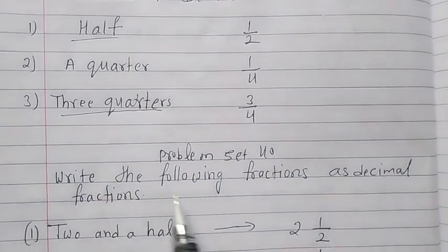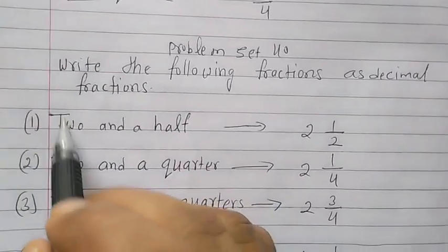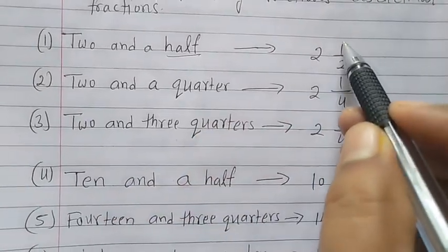Problem set 40, write the following fraction as a decimal fraction. First question, two and half, so first write the 2 and write the half, 1 upon 2.